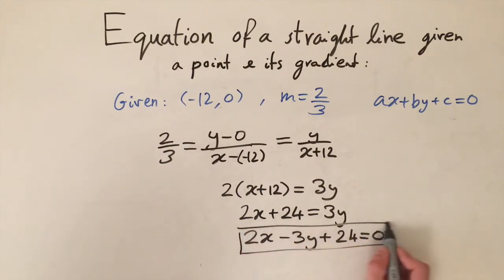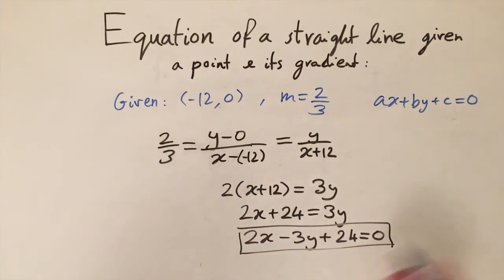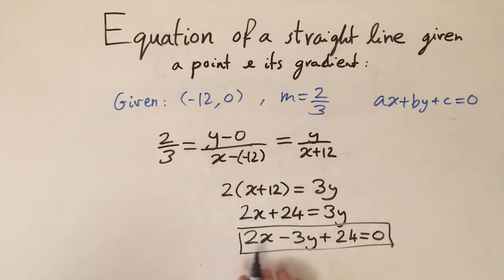You could also get it into the form y equals mx plus c if you want, but 2x minus 3y plus 24 equals 0 is an equivalent form of the equation.